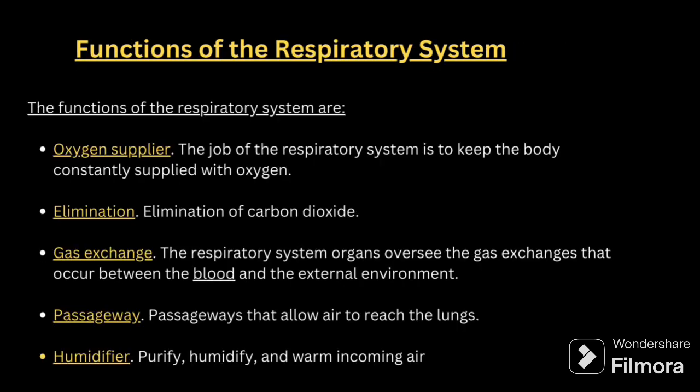We'll start with the respiratory system. Whenever we are starting with a system, you have to talk about the function of the system. The functions of the respiratory system are: first, oxygen supply; second, elimination; third, gas exchange; fourth, passageway; and fifth, humidifier. Oxygen supply means it supplies oxygen to all parts of the body. Elimination means it mainly eliminates carbon dioxide. Gas exchange happens between the blood and the external environment. Passageway allows air to reach the lungs. Humidifier warms and humidifies the incoming air.